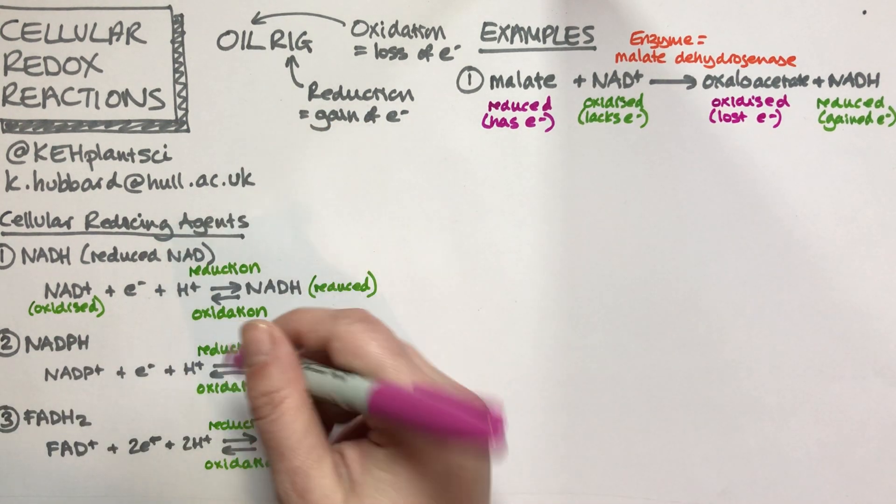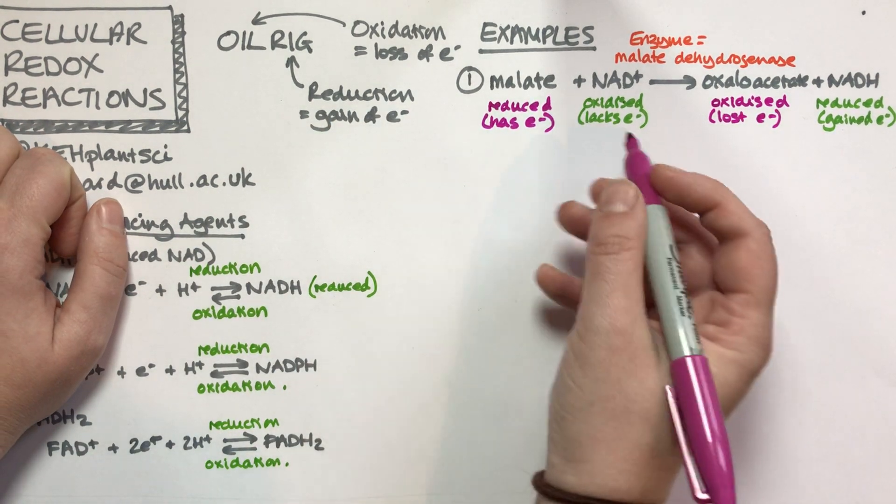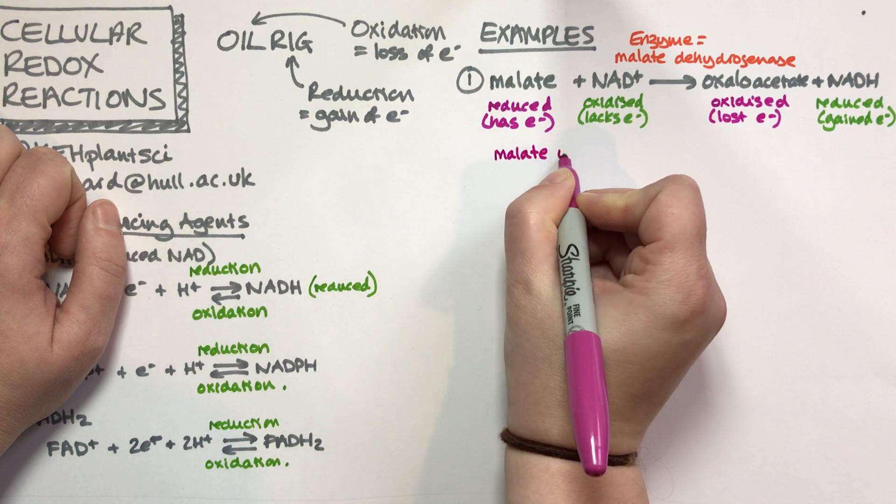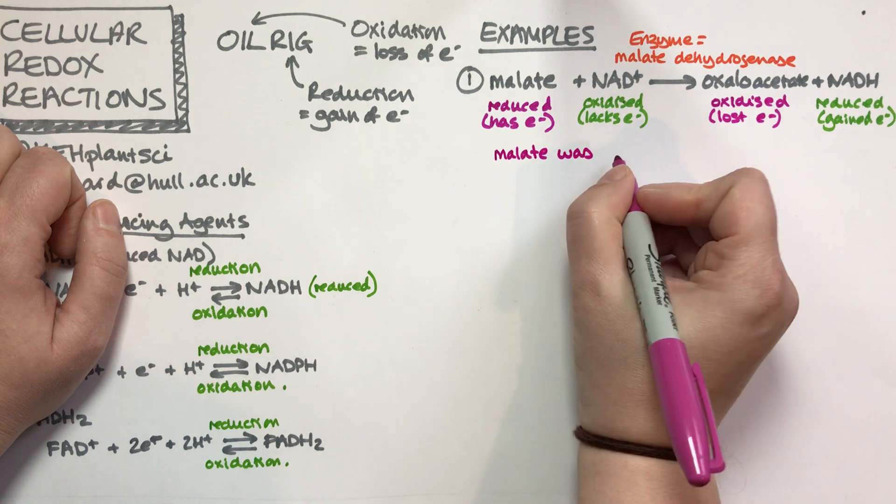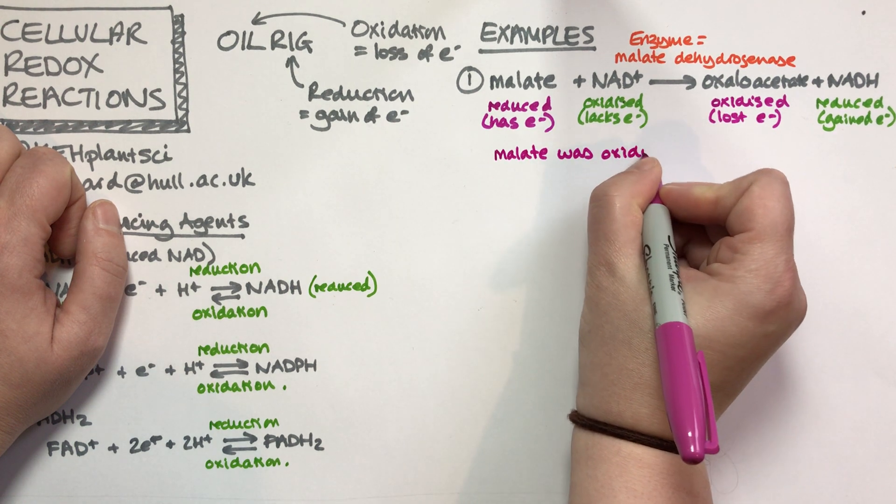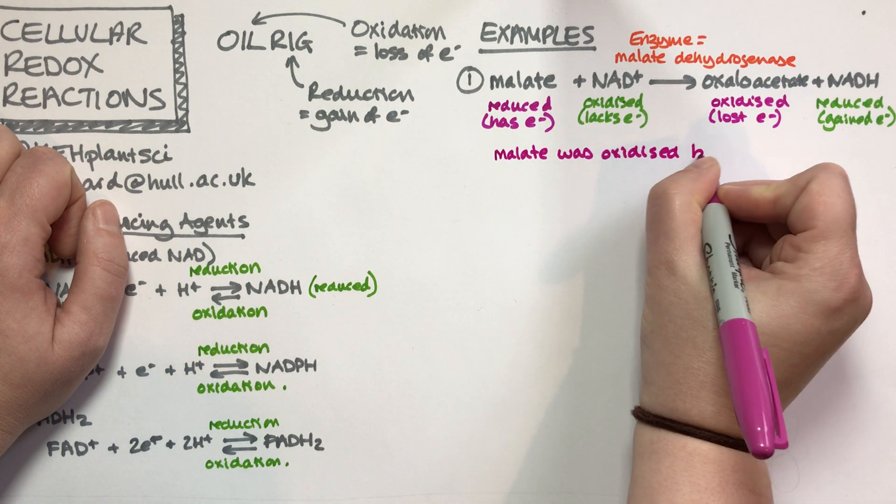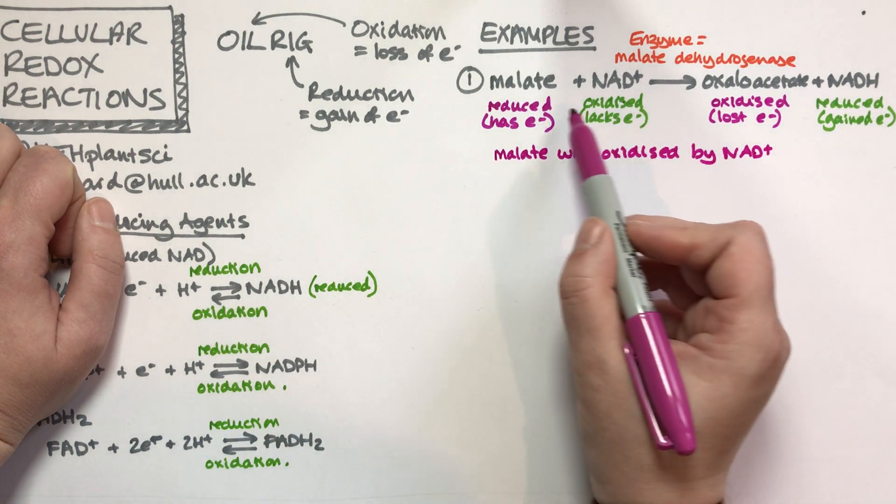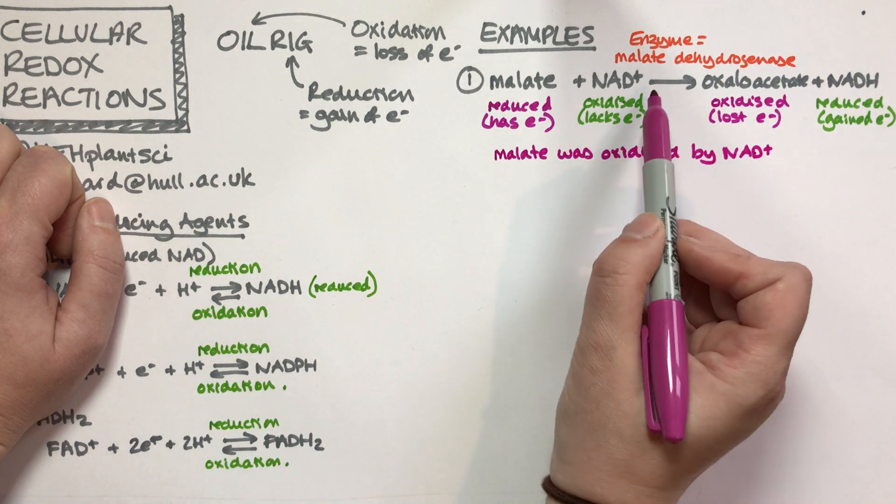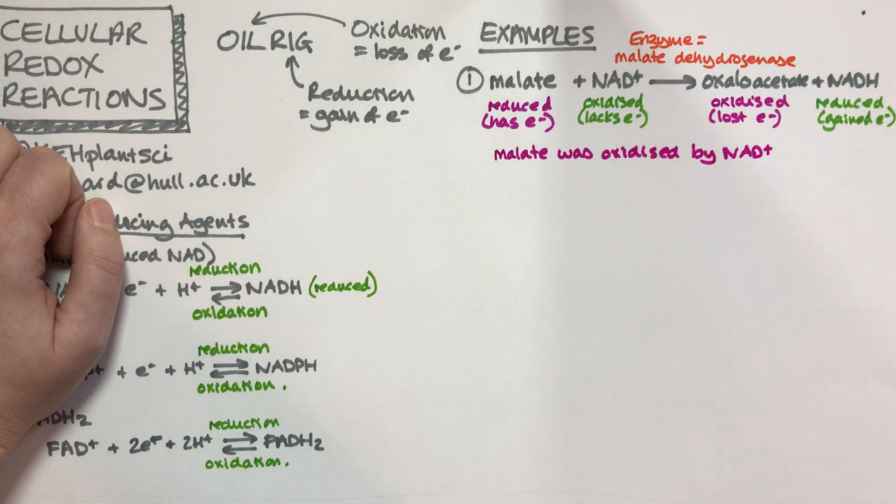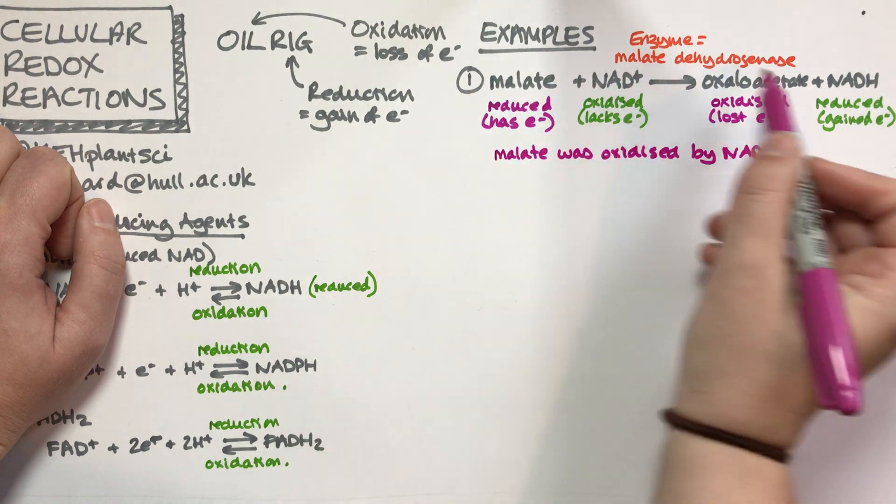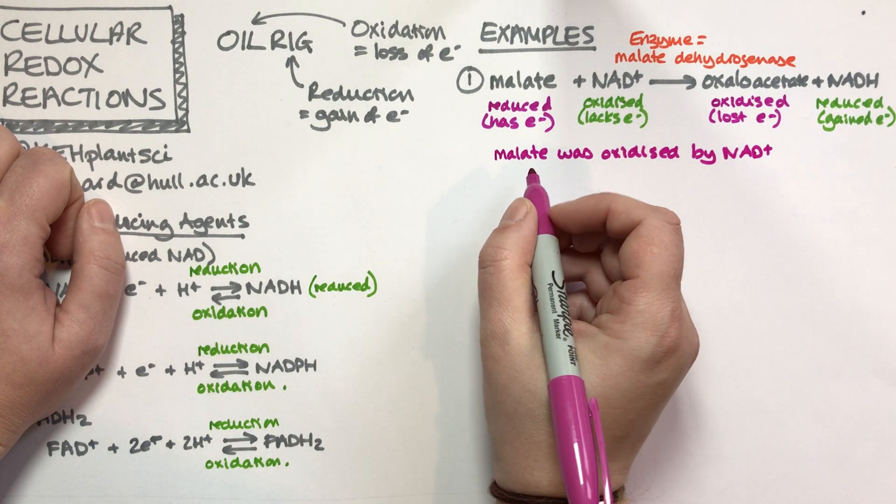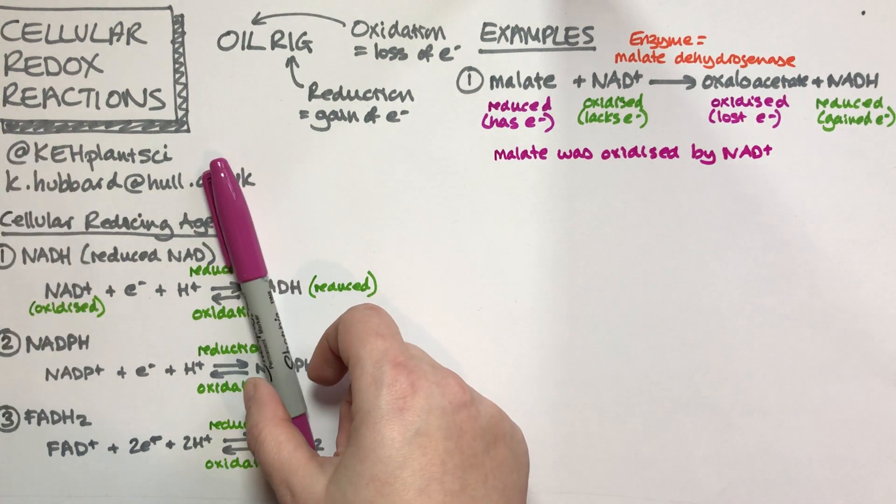There are a couple of statements we can make. We can say that malate was oxidized by NAD+. We have to have the NAD+, otherwise it won't work. That NAD+ has oxidized the malate, so the malate has gone to oxaloacetate.